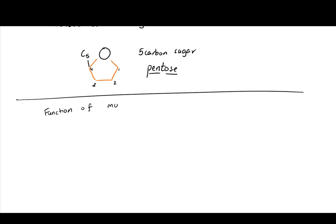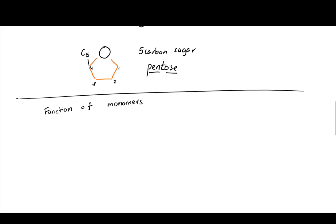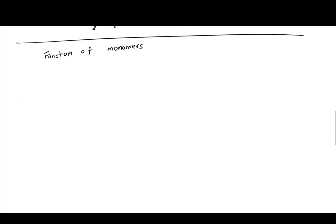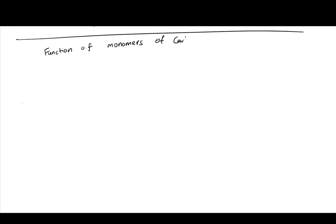So next, we will be focusing on the functions of monomers of carbohydrates. So you have already known the first monomers of carbohydrates, which is the more commonly known one, the glucose. But it is really not the only monomers of carbohydrates or monosaccharides.